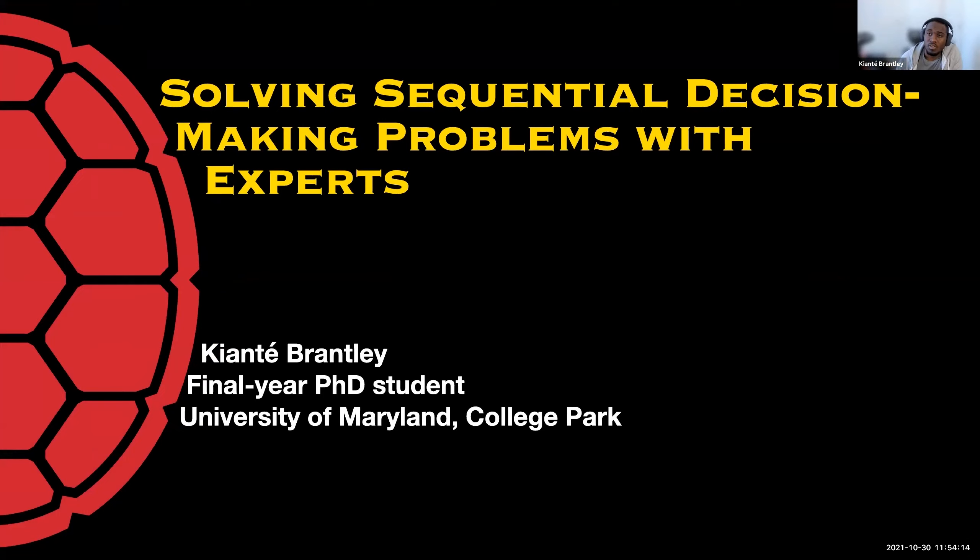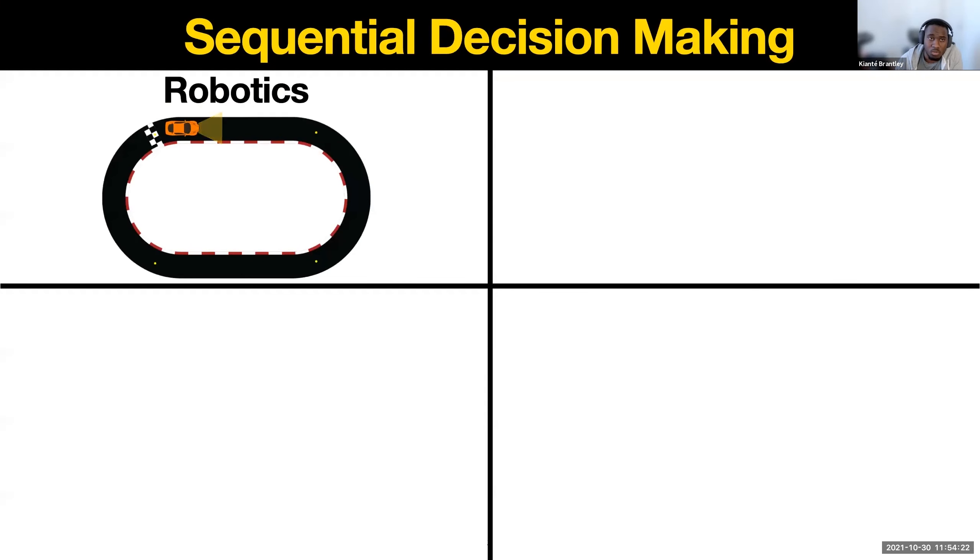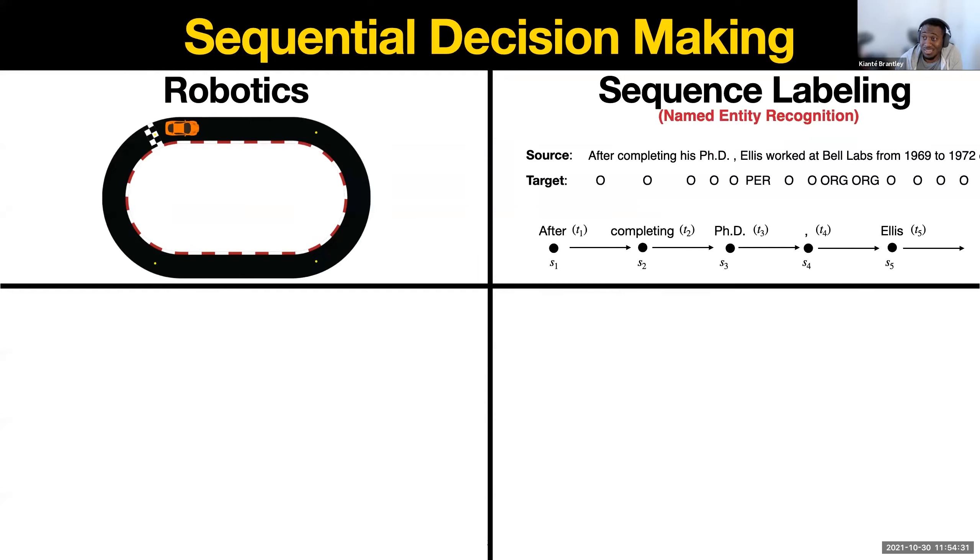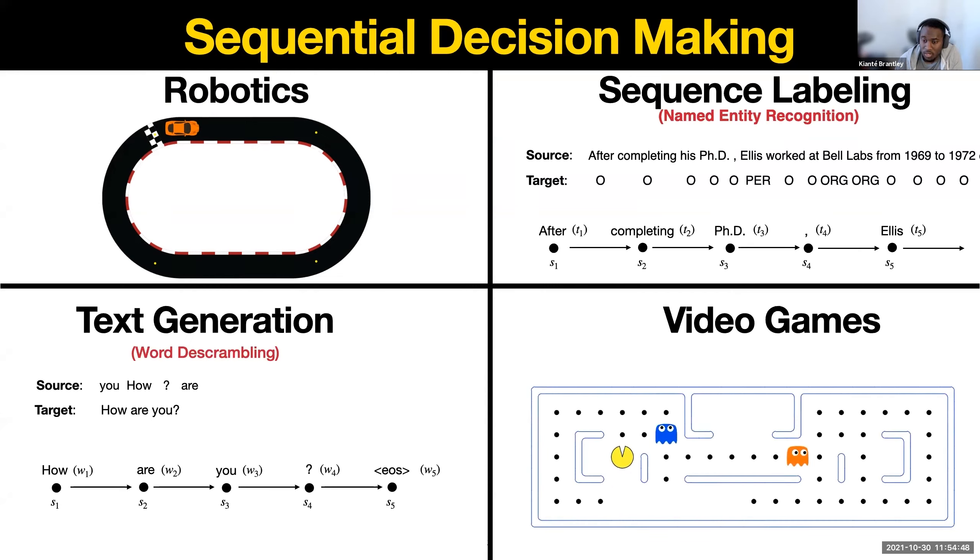So everyone, my name is Chianti Brantley. I'm a final year PhD student at the University of Maryland College Park. Today I'm going to talk to you about broadly my research agenda and problems I like to work on. The title of my talk is called Solving Sequential Decision-Making Problems with Experts. So in sequential decision-making, such as trying to train a robot to go around a race car track, or sequence labeling in the name entity recognition task where you're given a source sentence and the goal is to predict the entities of each of the words in the sentence, or text generation for a word-descrambling task, or in video games where you try to train an agent to solve games such as Ms. Pac-Man.